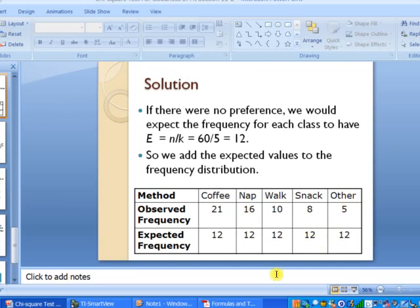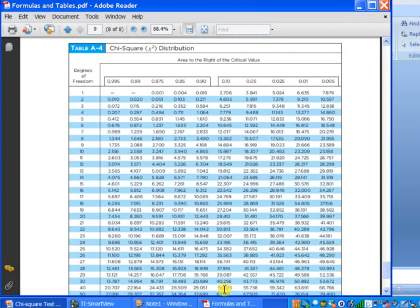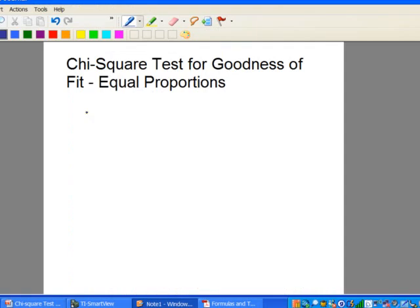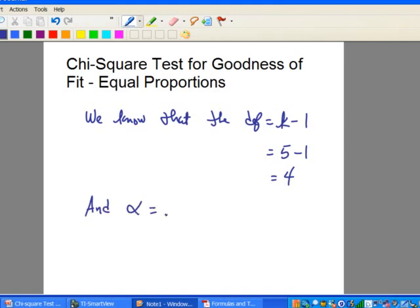So before we go any further with this, let's think about what the critical value would be. And we can use our chi-square distribution table to get that. So let's write down some information. We have our hypotheses here written already. Now, so first we know that the degrees of freedom, I'll just write df for that, is the number of classes minus 1. So in this case, we have five classes, subtract 1. So that means we have four degrees of freedom. And the level of significance is 10%. So let's take a look at our chi-square table.